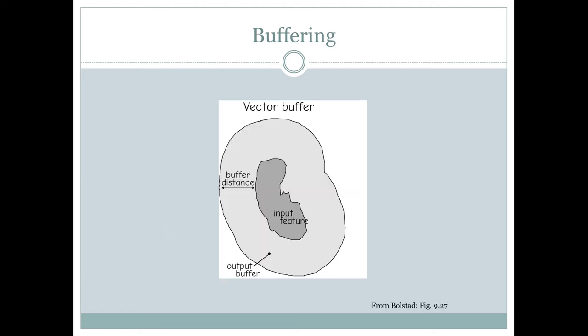So we have an input feature. We buffer that by a particular distance, and then we get a new layer that's output from this, which is the buffer layer. We actually create a new GIS layer when we do buffering that's always going to be a polygon layer, and it's always going to show these rounded buffers around some sort of feature.